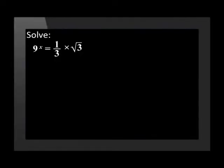Let's try a more difficult question together. Solve: 9 to the power of x is equal to a third times by the square root of 3. Make all the bases products of their prime factors. So we have 3 to the power of 2x is equal to 3 to the power of negative 1 times by 3 to the power of a half.